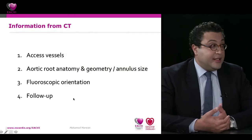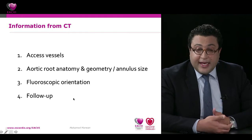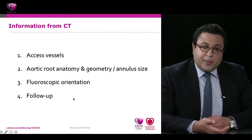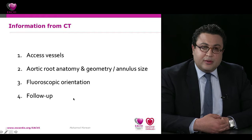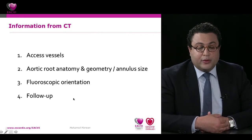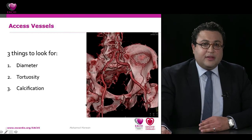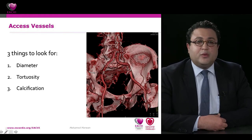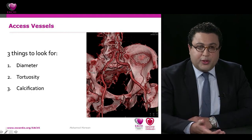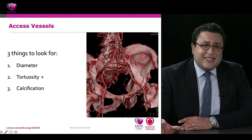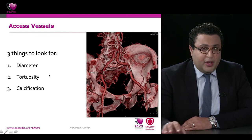CT reporting for TAVI requires: a look at access vessels, aortic root anatomy, geometry, and annulus sizing to determine if the procedure is feasible. The fluoroscopic orientation suitable for implantation can be provided for free by CT. When assessing access vessels, three things must be evaluated: vessel diameter (whether the lumen is sufficient to accommodate the device), tortuosity, and calcification — which is quite predominant in this elderly population.